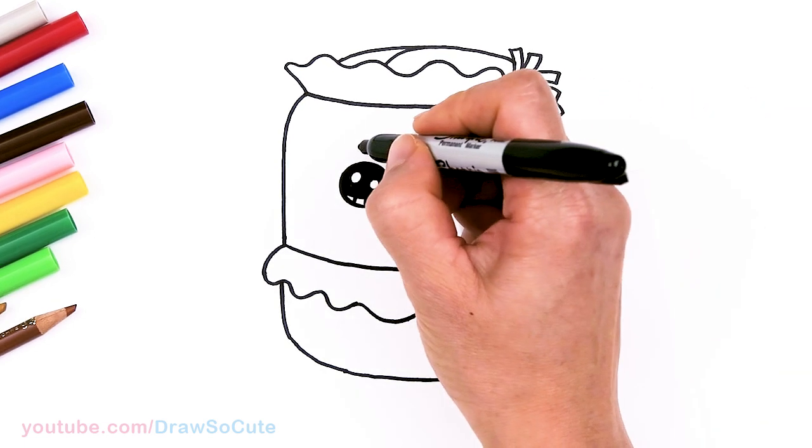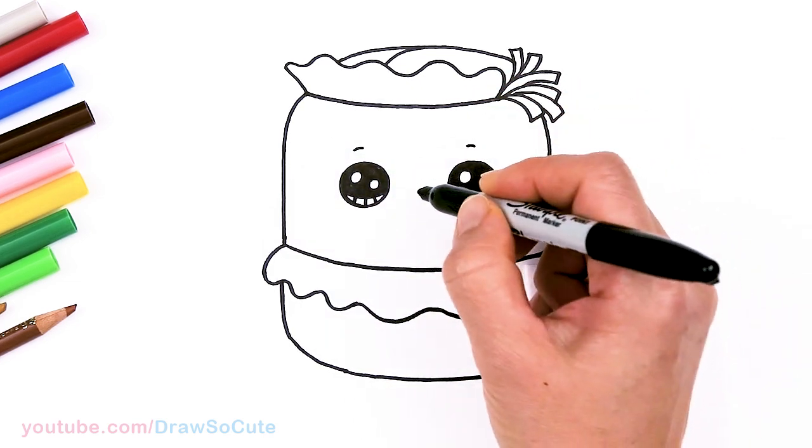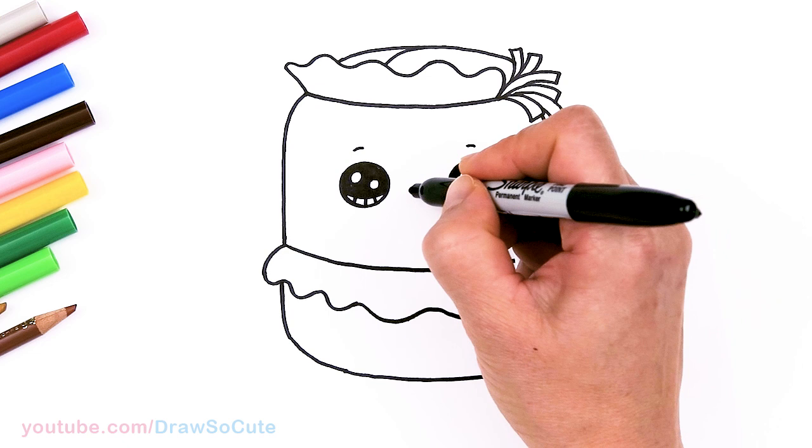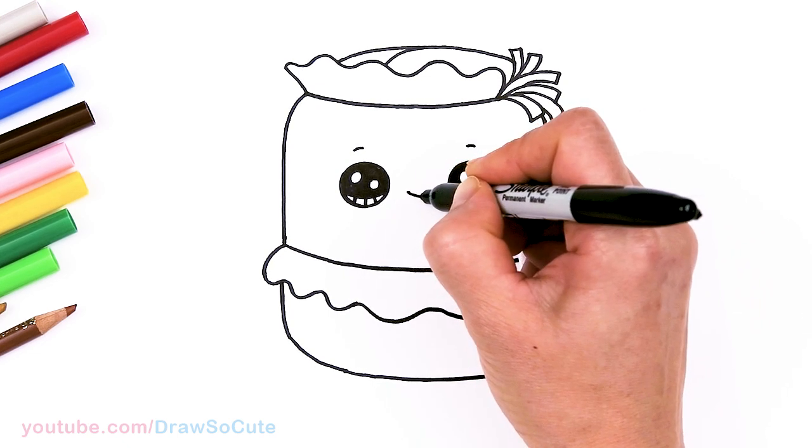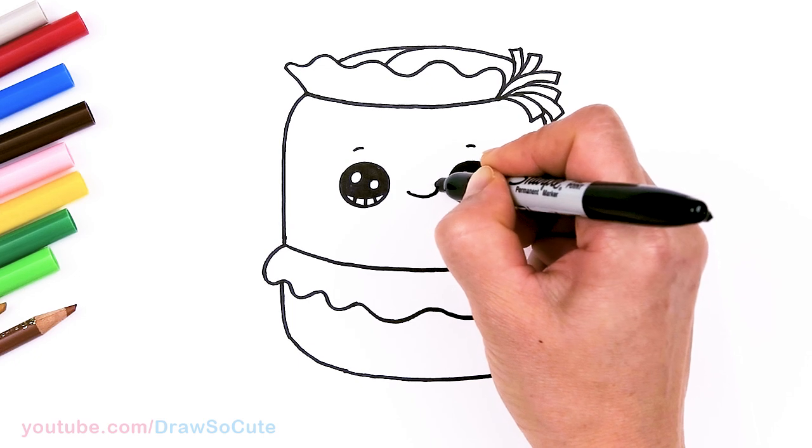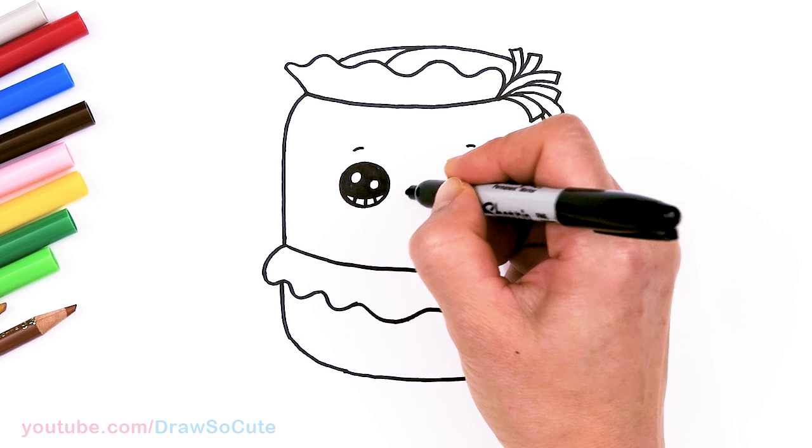There. So I have the eyes in. I'm going to come above each eye. Just draw a soft curve. And then let's give this burrito here a cute little smile. So I'm going to wrap it around with a little tongue. Because I love burritos.